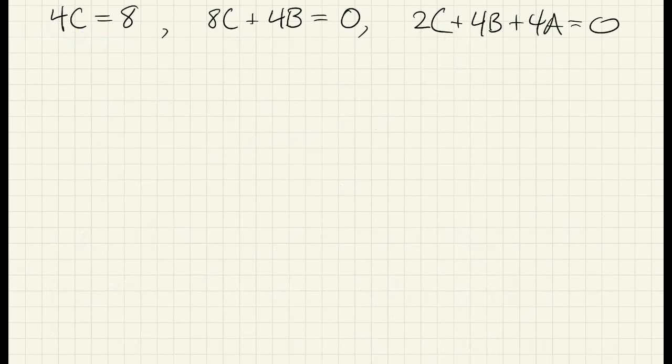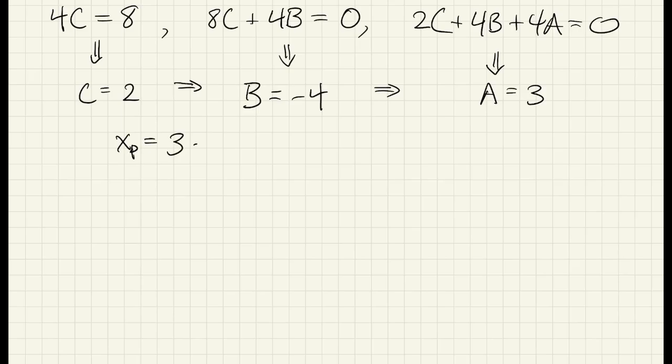And these are three linear equations and three unknowns. We could write it all in matrix style and solve it with those methods, but it's actually easy to solve by inspection. If you start from the first equation, you can find c, and then you can plug that into the second one, and that tells you b, and then put those into the other equation, and you can get a. That tells us everything we need. Now we know a particular solution of the equation.